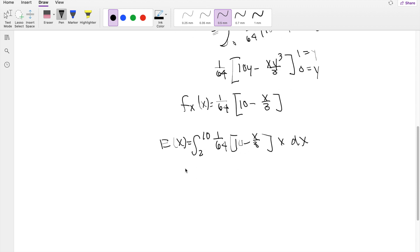I'm going to throw the 1 over 64 outside again. So multiplying that X back in, you actually get 10X minus X squared over 3 dx. And taking the antiderivative, this is equal to X squared times 10 over 2 minus X cubed over 9, integrating from 2 to 10. And don't forget about the constant sitting outside, 1 over 64.